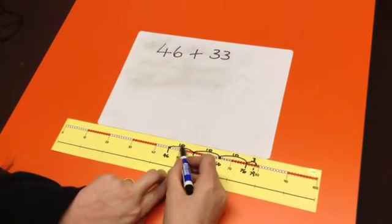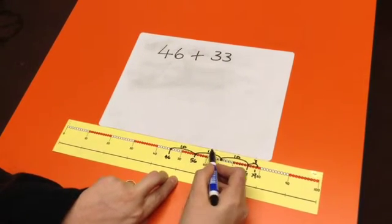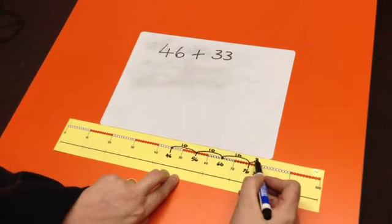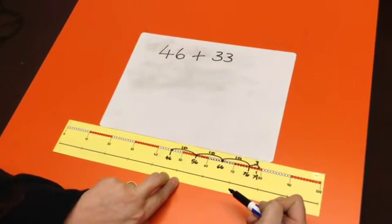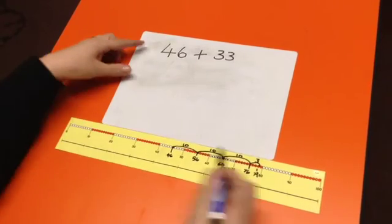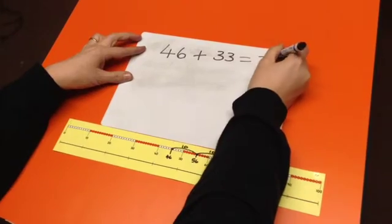When we check our work, we can see we've added together ten and ten making 20, another ten making 30, and three more making 33. So, the answer to our sum, 46 add 33, equals 79.